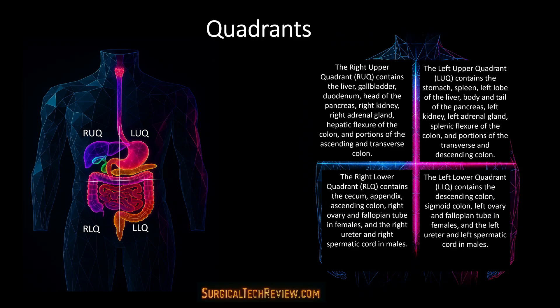Next, we divide the abdomen into four quadrants: right upper quadrant, left upper quadrant, right lower quadrant, and left lower quadrant. Each contains specific organs. For example, the right upper quadrant contains the liver and gallbladder, while the left upper quadrant includes the stomach and spleen. The right lower quadrant is home to the cecum and appendix — important for appendectomy procedures. The left lower quadrant contains the descending and sigmoid colon.